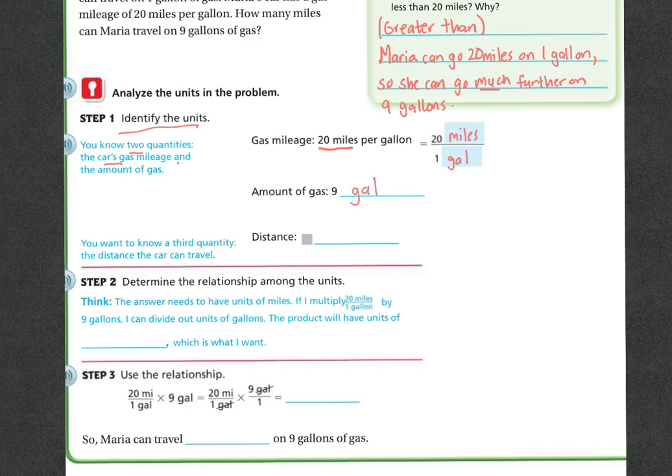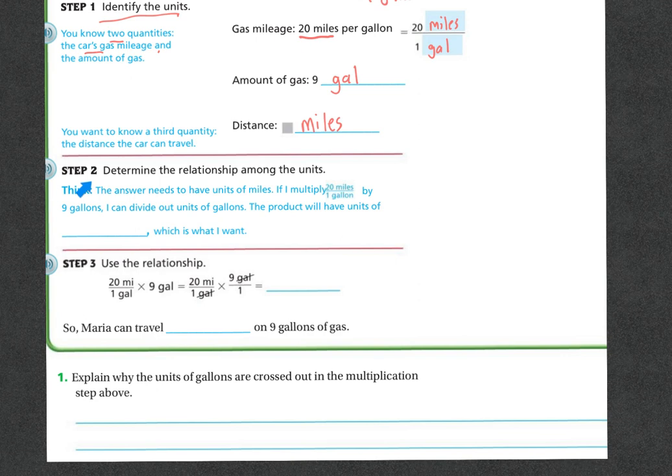And the distance that we're going, we don't know how much the distance is, but we know that it's going to be in miles. Step two, determine the relationship among the units.